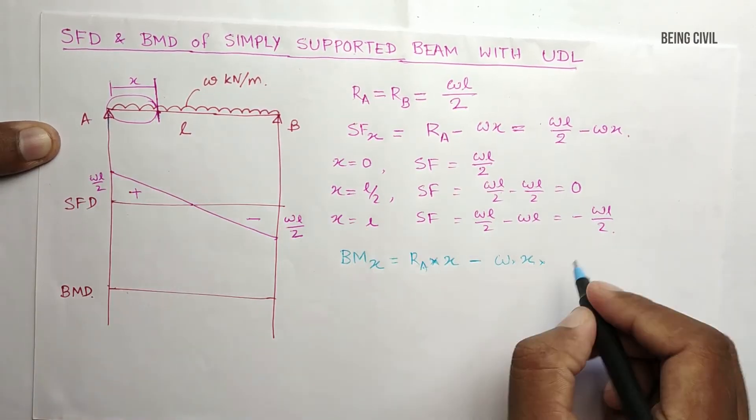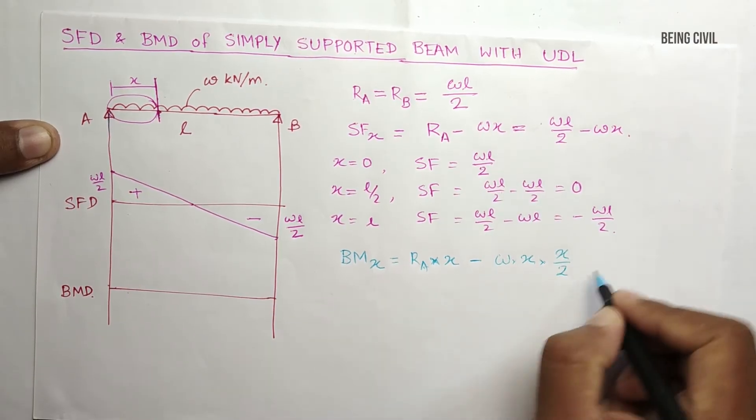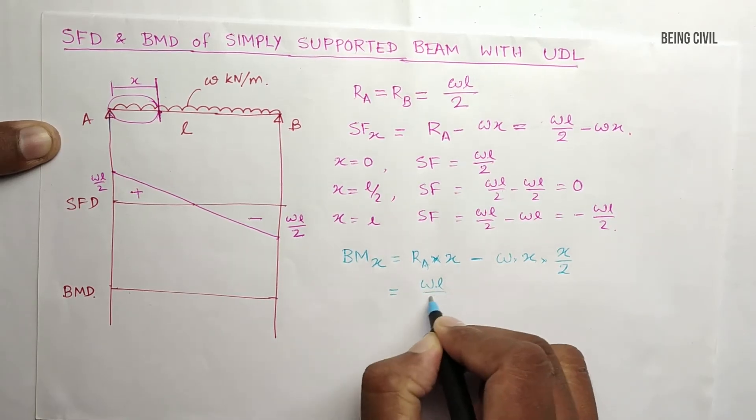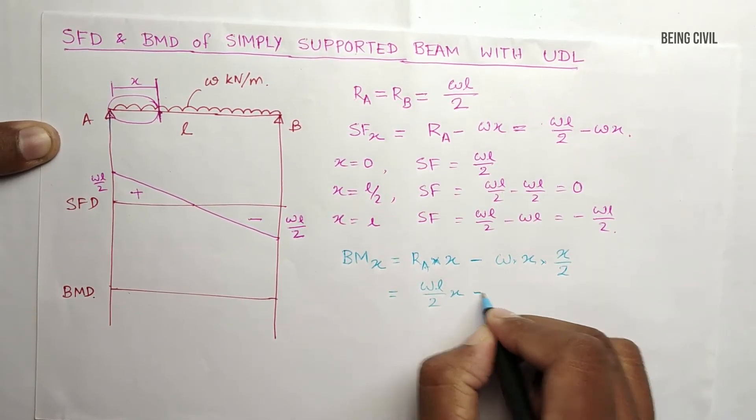And the CG distance is X by 2, so the moment equation is WL by 2 into X minus WX square by 2.